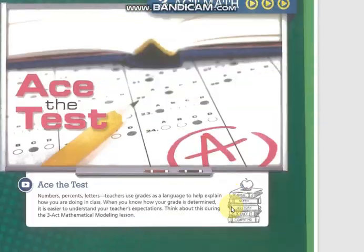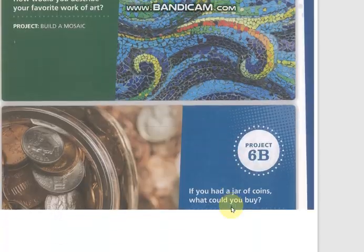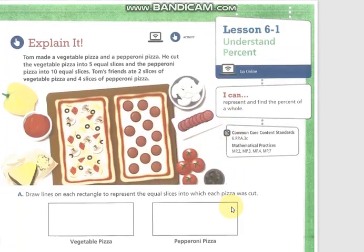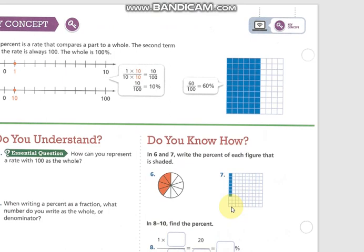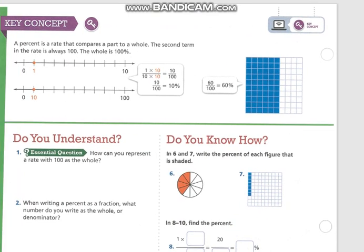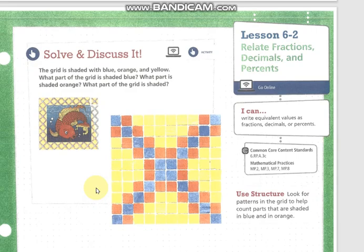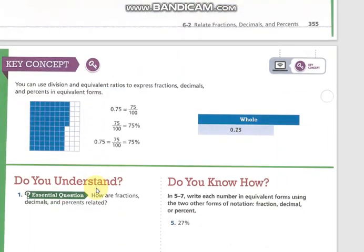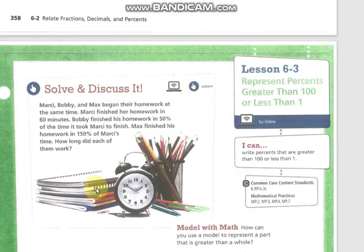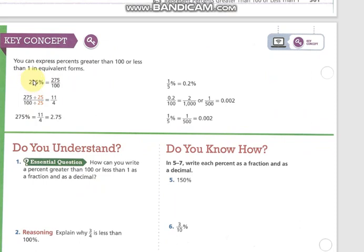Let's take a quick look at your book. We have the 'Get Ready' page. You can see some projects. Lesson 1 is 'Understand Percent' — you can see the key concept here. Lesson 2 is 'Relate Fractions, Decimals, and Percent.' Lesson 3 covers representing percent greater than 100 or less than 1 — what is the percent for values in those ranges?